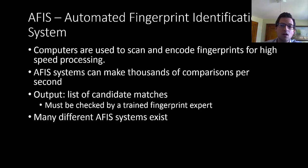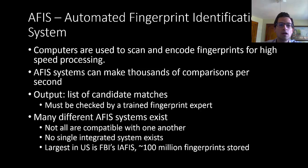There are a bunch of different AFIS systems, some at the local level, county level, state level, as well as federal level. Unfortunately, not all of them are compatible with one another. There's different software systems that manage these AFIS databases and they don't all communicate with each other. The largest one is in the FBI, the iAFIS or Integrated Automated Fingerprint Identification System, and they have over a hundred million fingerprints stored there.